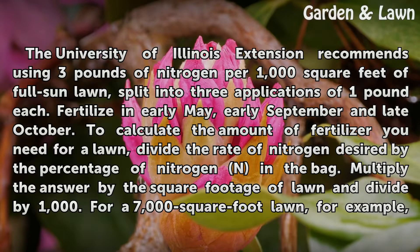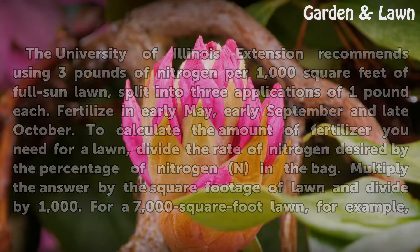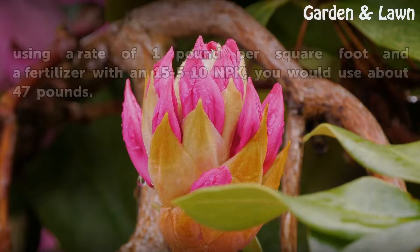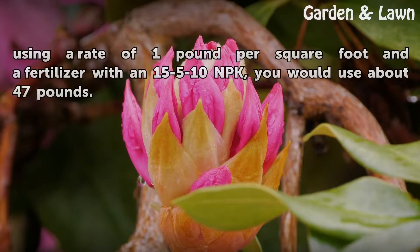Multiply the answer by the square footage of lawn and divide by one thousand. For a seven thousand square foot lawn, for example, using a rate of one pound per square foot and a fertilizer with a 15-5-10 NPK, you would use about 47 pounds.